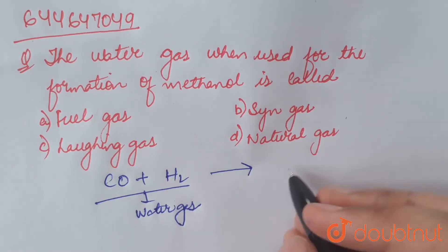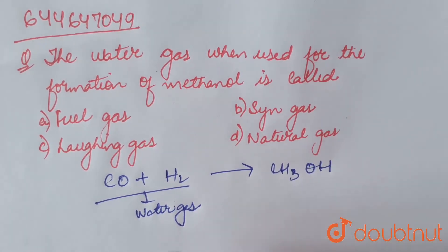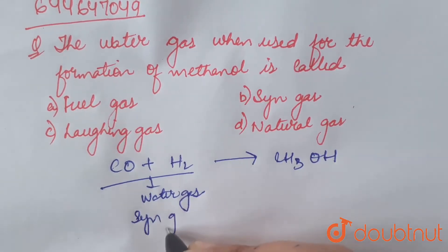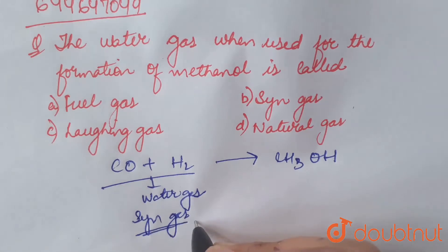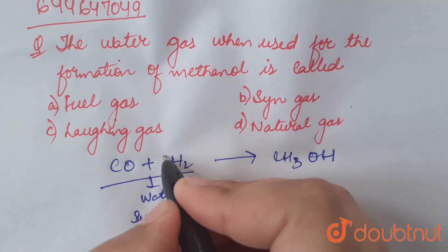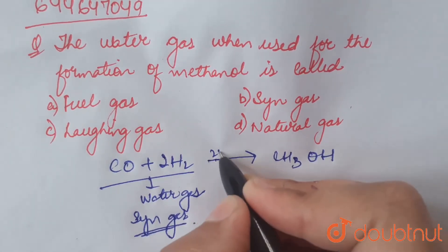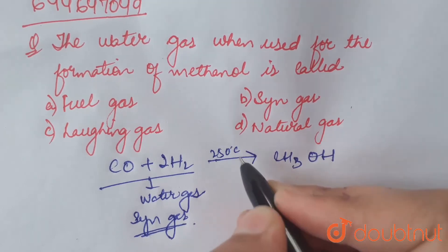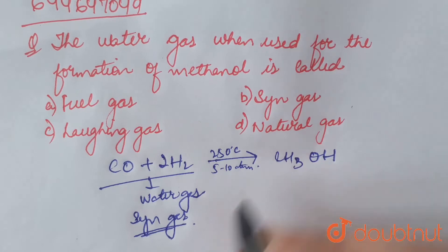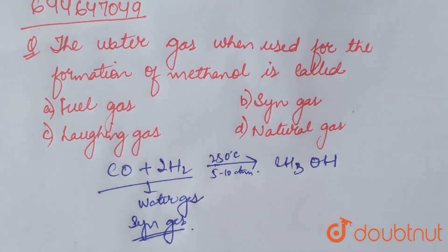the manufacture of methanol, that is CH₃OH, then this is called thin gas. The other name for water gas is thin gas. Balancing the reaction — this reaction takes place at 250 degrees Celsius and a pressure of 5 to 10 atmospheres. This is a memory-based question.